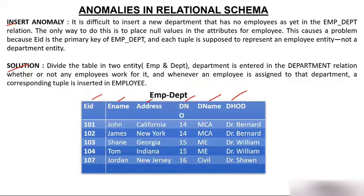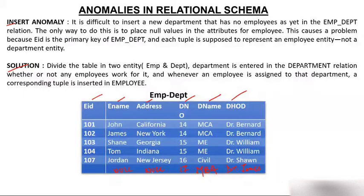Now suppose I want to enter a new department. I've decided to open a new course — MBA — with department code 17, and Dr. James as the HOD. This is all fine, but since I have just created the department and have not yet recruited any employee, the employee ID, employee name, and address will all have null values.